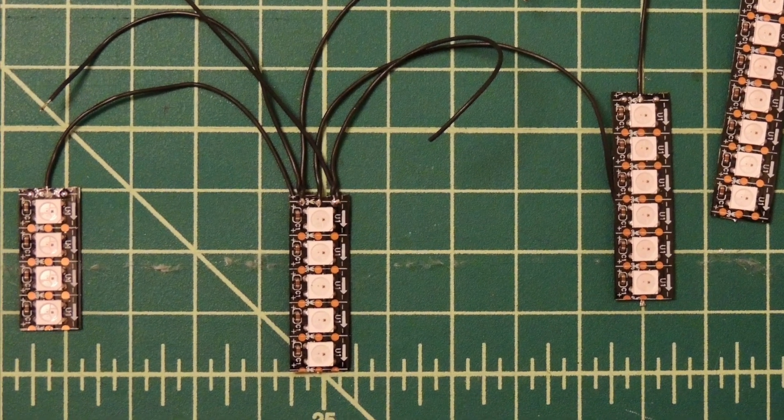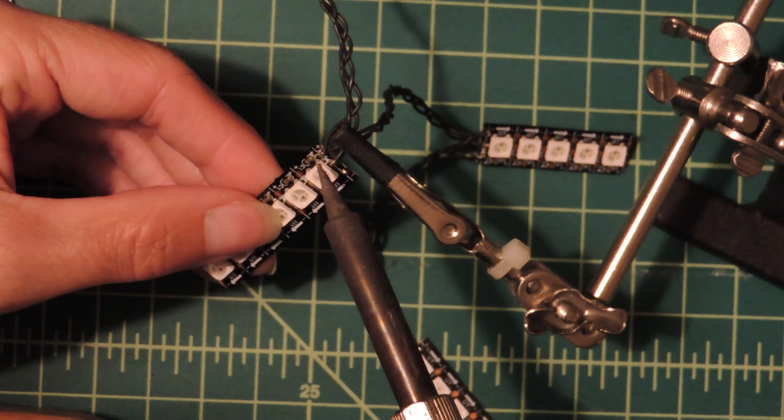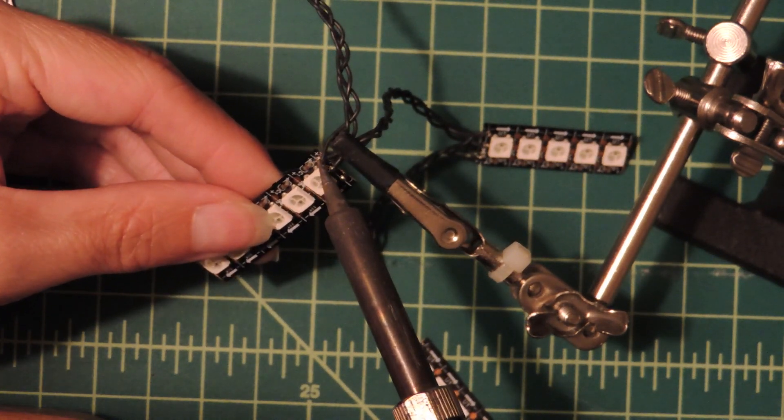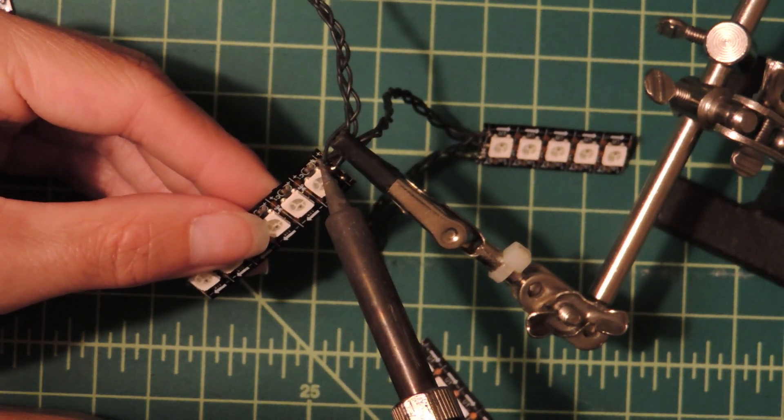Now solder the ground and power lines. Braid the wires down to the next pixel strips. Braiding is optional, but really helps with wire management.